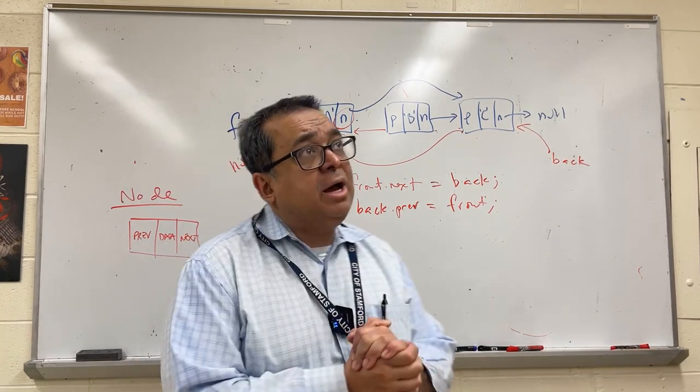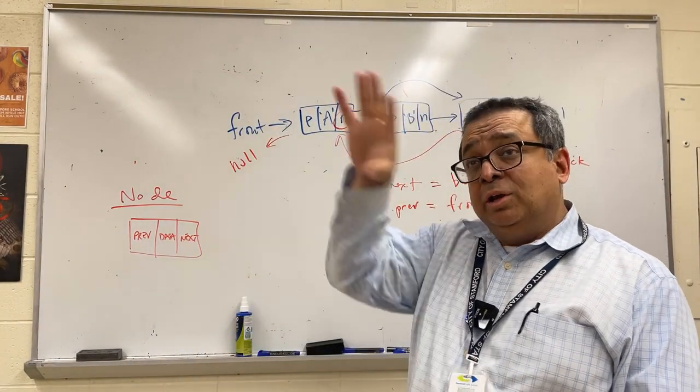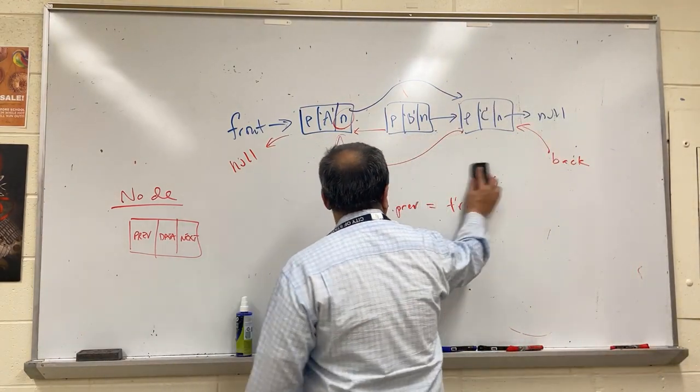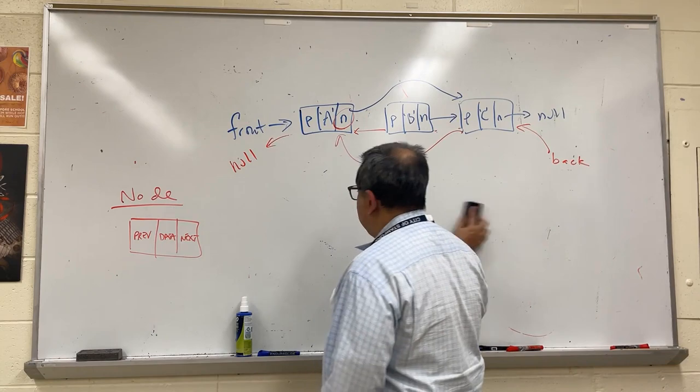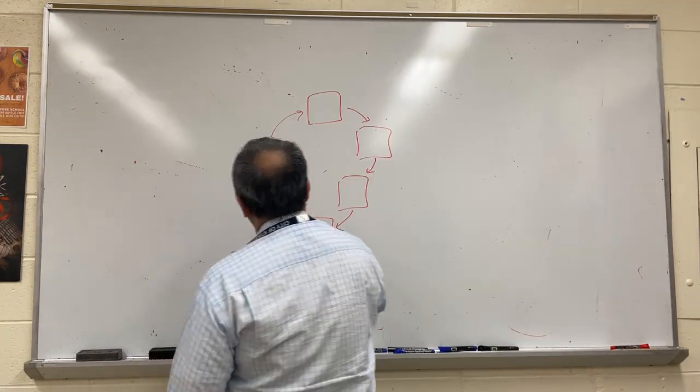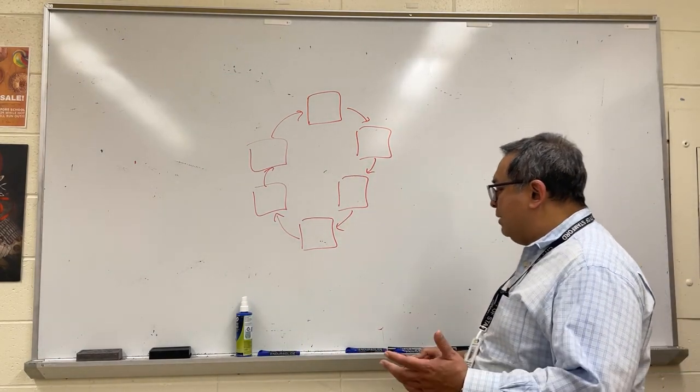Now we're going to spend a little bit of time talking about the other type of linked list, and this one is going to be circular, called a circular queue. Let's look at what that looks like. The circular queue, by the way, can be single linked or double linked. We're just going to talk about a single linked one.